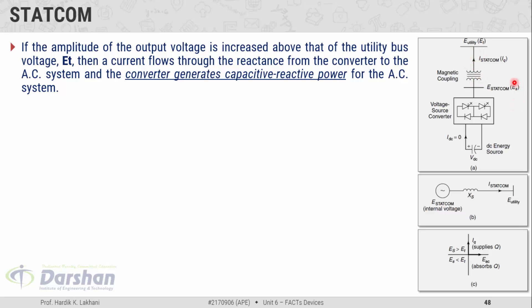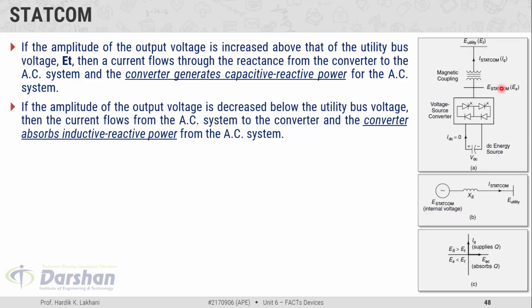When the magnitude of ES is greater than ET, the direction of the current is from the voltage source converter to the AC system. Conversely, when the magnitude of ES is less than ET, the STATCOM absorbs reactive power from the AC system. Hence, the magnitude of the output voltage of the voltage source converter decides the reactive power flow — whether the STATCOM should absorb or inject reactive power into the system.